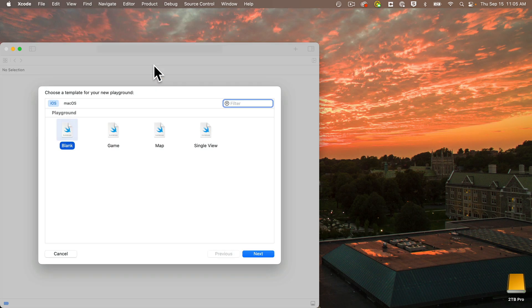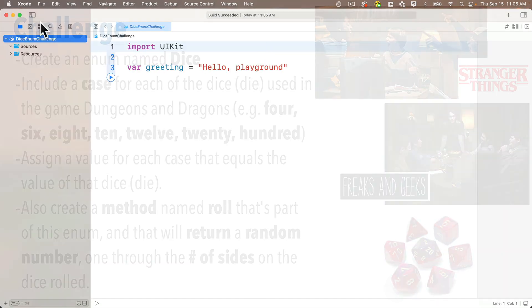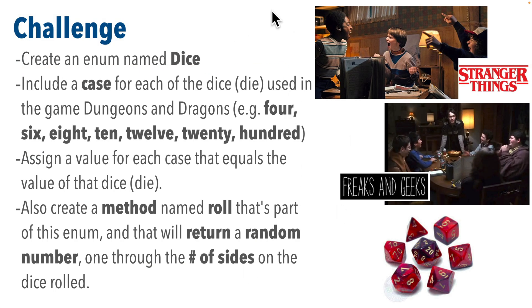We'll open a new playground in Xcode and call this Dungeon Dice Challenge. As a reminder, here was our prior challenge from the earlier lesson: create an enum called Dice. There should be a case and value for all seven types of dice that you would use in Dungeons and Dragons, and the enum should include a method called roll that returns a random value appropriate when rolling that dice.